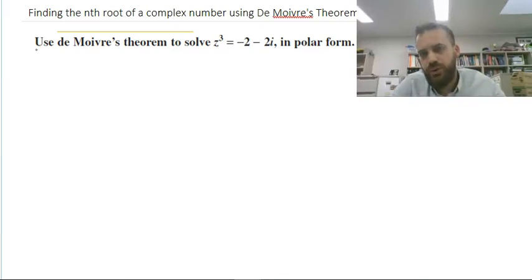So this time we're going to be finding the nth root of a complex number. We're going to be using De Moivre's Theorem to do it. Probably not pronouncing that right. Use De Moivre's Theorem to solve z cubed equals negative 2 minus 2i in polar form.